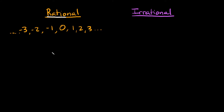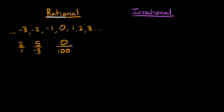A rational number can also be a ratio or a fraction of two integers. For example, 2 over 1 is a rational number because 2 is an integer and 1 is an integer. I could have 5 over negative 3 — that's also a rational number because 5 and negative 3 are both integers. Or I could have 0 over 100, which is also a rational number because 100 and 0 are both integers.